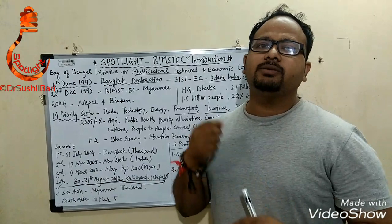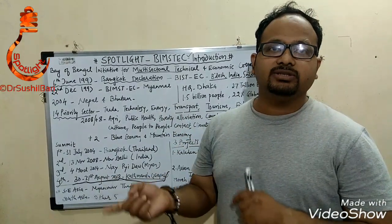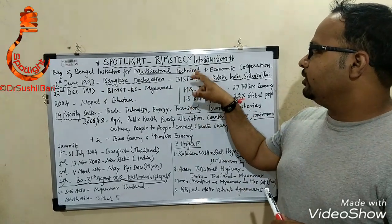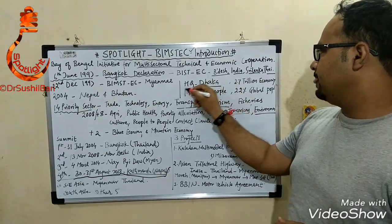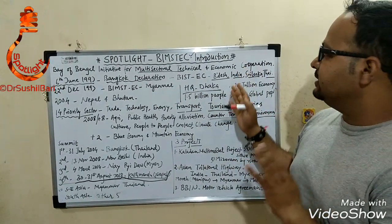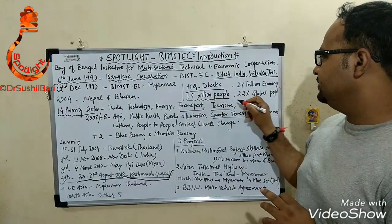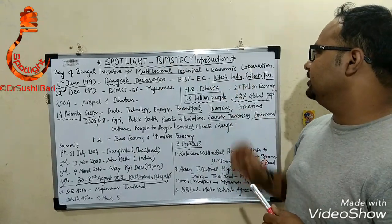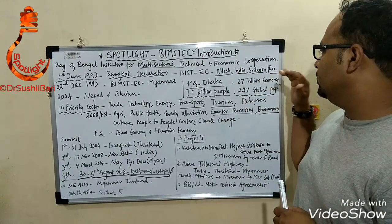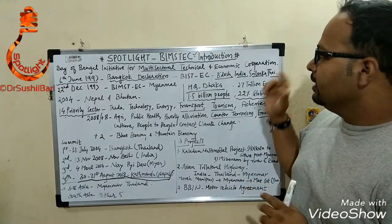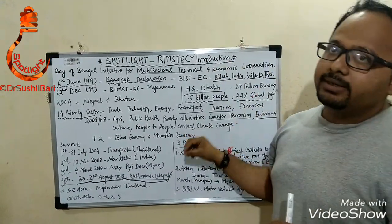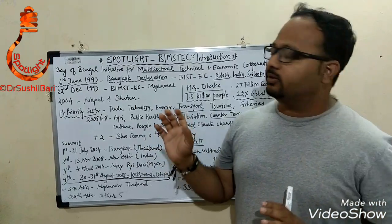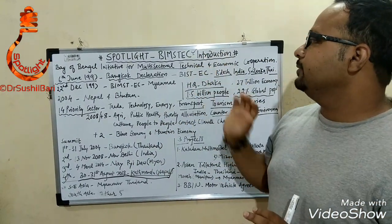This is very important as UPSC may ask which countries belong to South Asia. You must be clear about that. The headquarters of BIMSTEC is at Dhaka, Bangladesh. BIMSTEC consists of nearly 1.5 billion people, which is 22% of global population. It also represents a $2.7 trillion economy, maintaining an average economic growth of 6.5% even during recession periods.